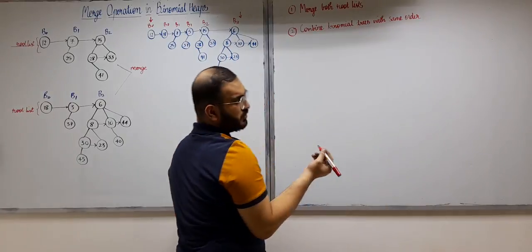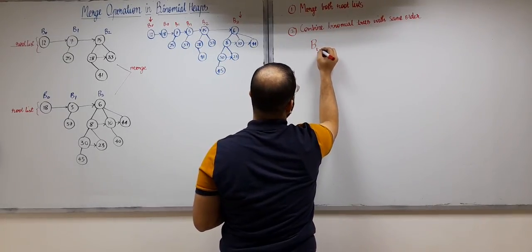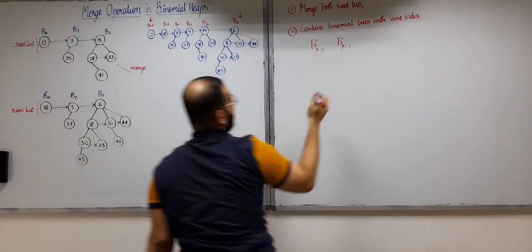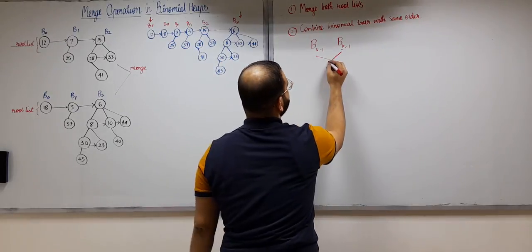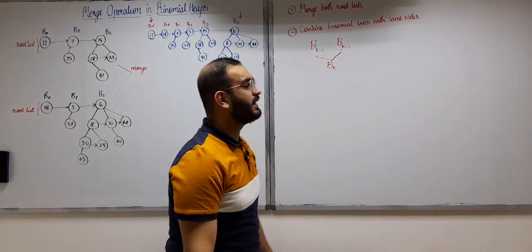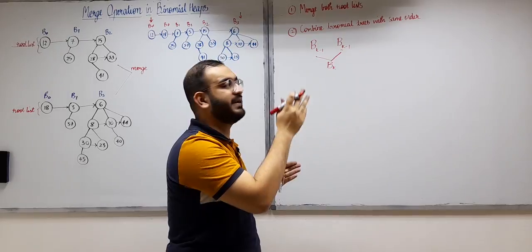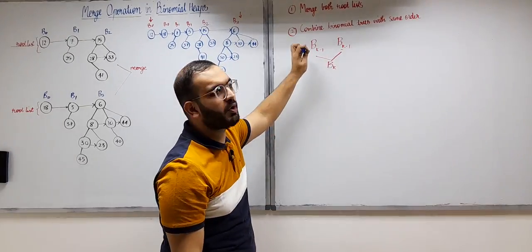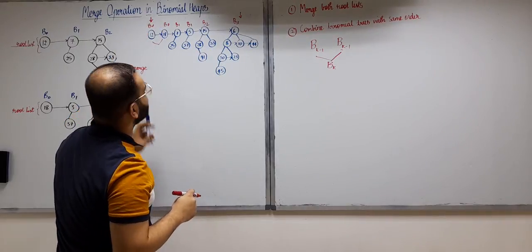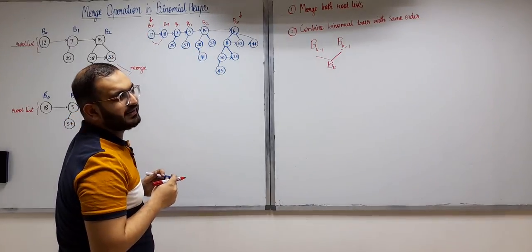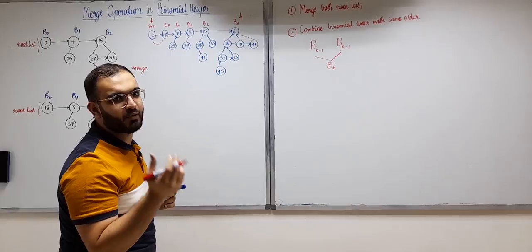The second step is combining binomial trees with the same order. We will have two B(k−1) trees, and when we combine two B(k−1) trees we get a Bk tree. However, we cannot directly combine them — we must also check that we are maintaining the heap ordering property in every binomial tree.